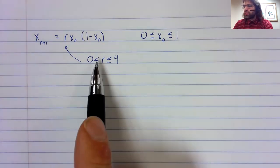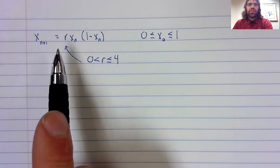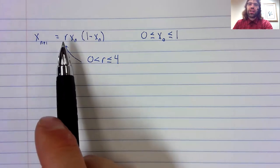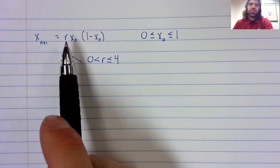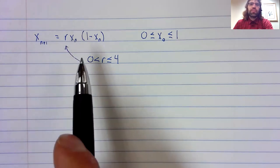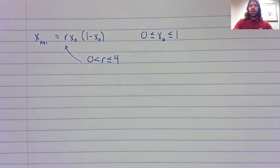This is a strict inequality because if r is zero, then all of these terms are just zero. So r equals zero isn't very interesting.